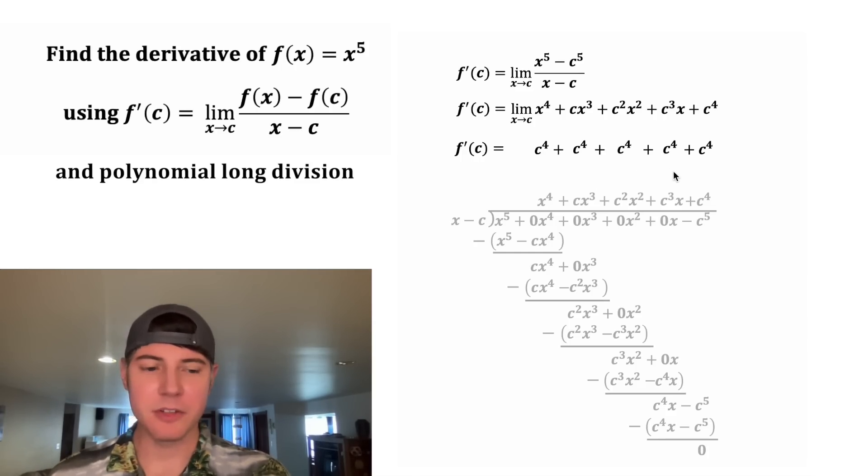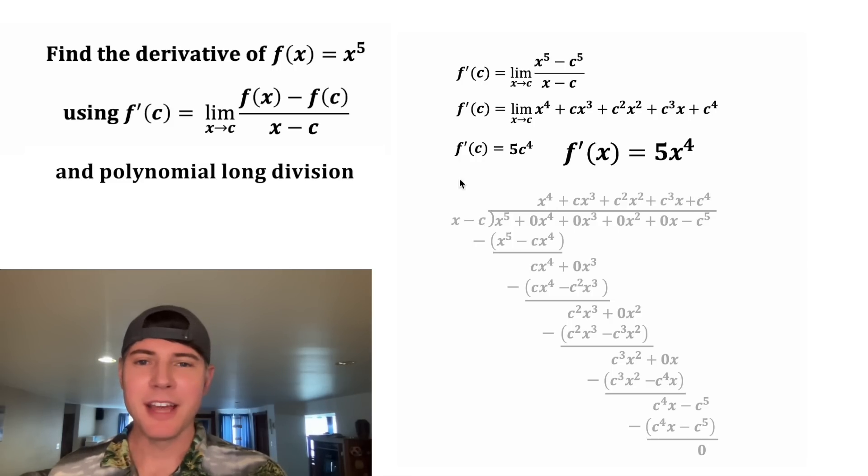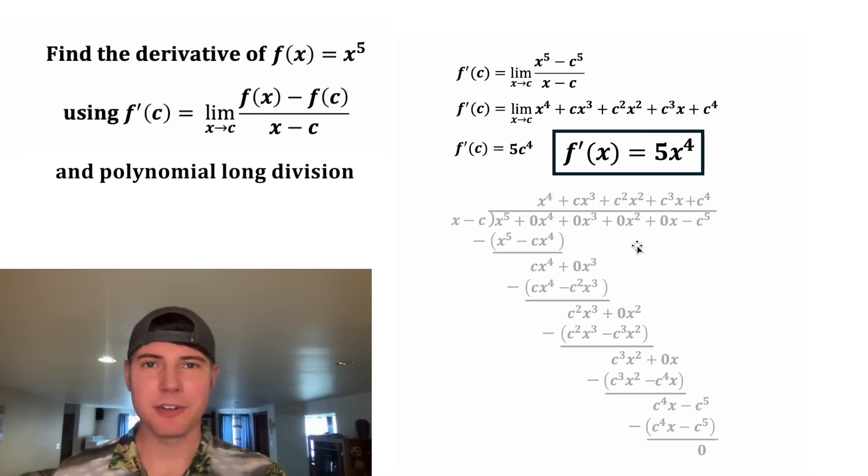Now we have a whole bunch of c^4's. In fact, we have 5 of them. So this would be equal to 5c^4. And that is f'(c). So ultimately, they wanted the derivative of f(x). So let's write this as f'(x) is equal to 5x^4. And that's the answer to our question, let's put a box around it.